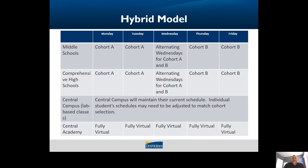If you decide to choose the hybrid model, that is different. What you'll experience there is really a two-week cycle of one week being three days in person and two days online, and then the next week being two days in person and three days online. You will be placed in a cohort, either cohort A or cohort B, and Wednesdays are the days that alternate for you, as you can see in the schedule.